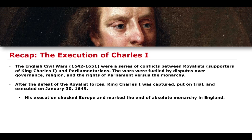The English Civil Wars, of which there were two main ones, took place between around 1642 to the 1650s. They were a series of conflicts between the Royalists — the supporters of King Charles I — and the Parliamentarians, fuelled by disputes over governance, religion, and issues relating to Parliament and its relation to taxation.